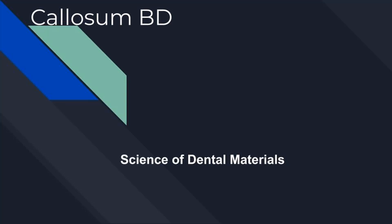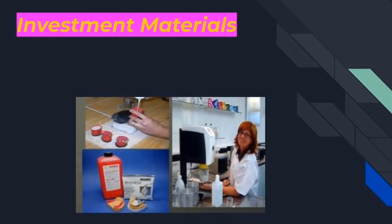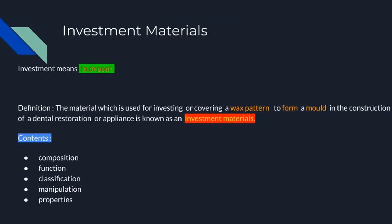Hello viewers, today we are going to discuss the science of dental materials. The topic is investment materials. From the name, investment means to deposit. The material which is used for investing or covering a wax pattern to form a mold in the construction of a dental restoration or appliance is known as an investment material. That means investment material is a transformer material — to transform a wax pattern into a mold.